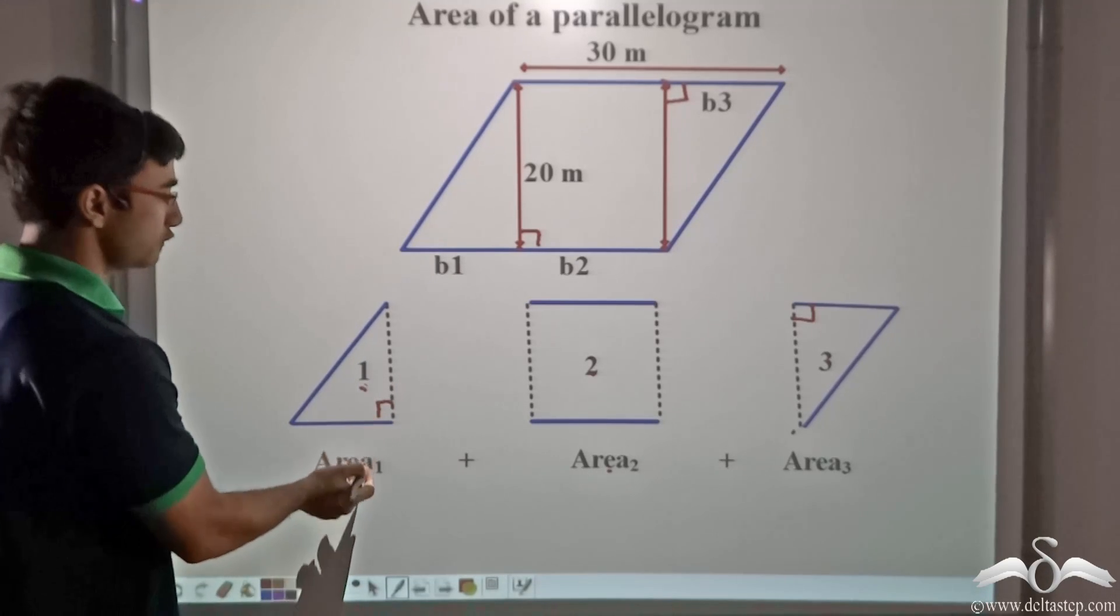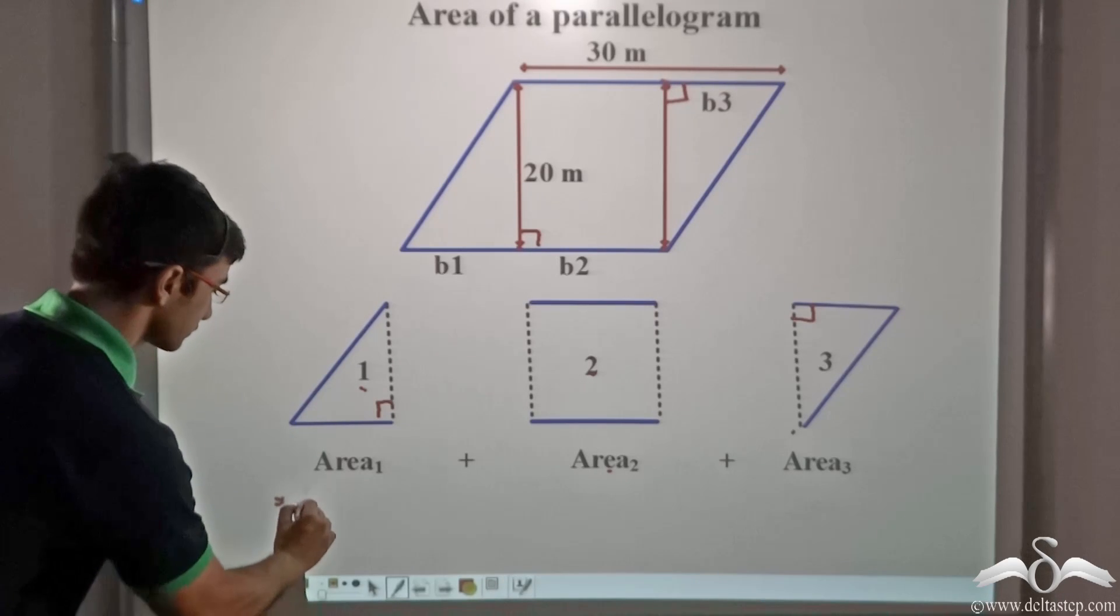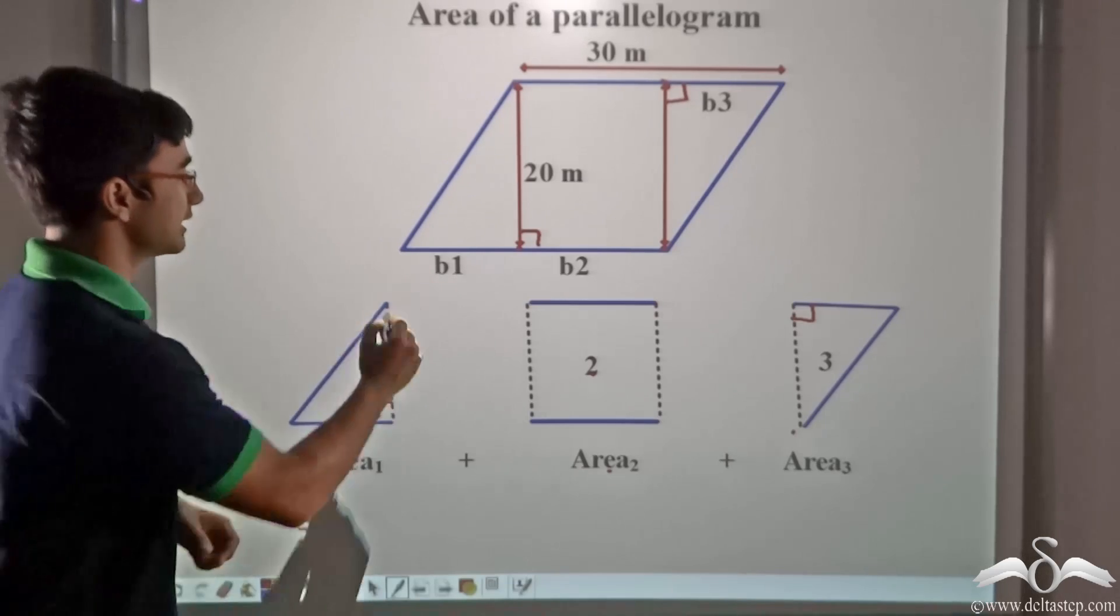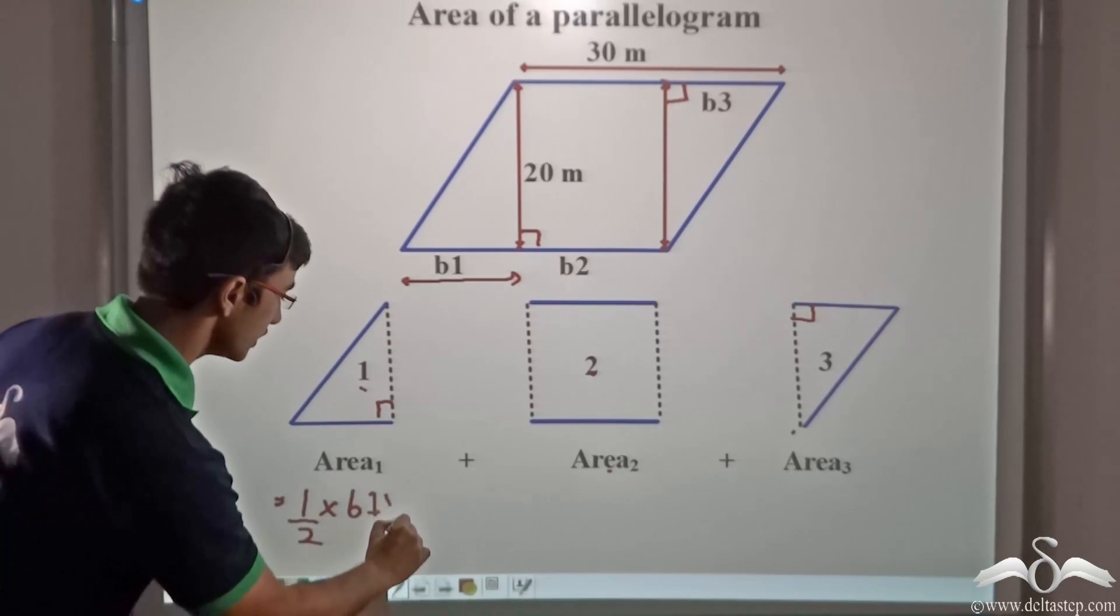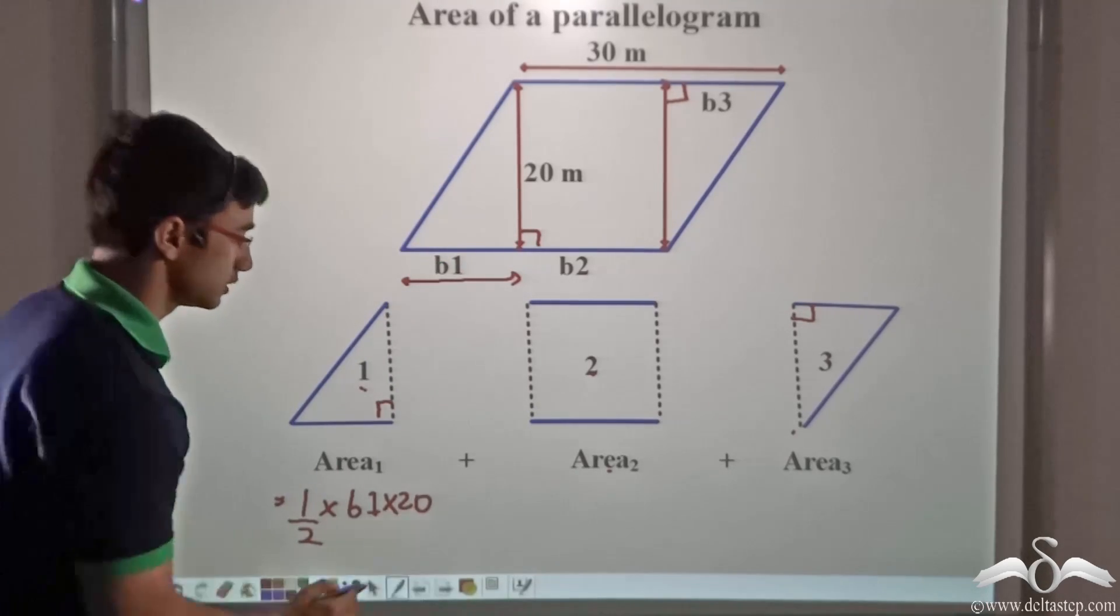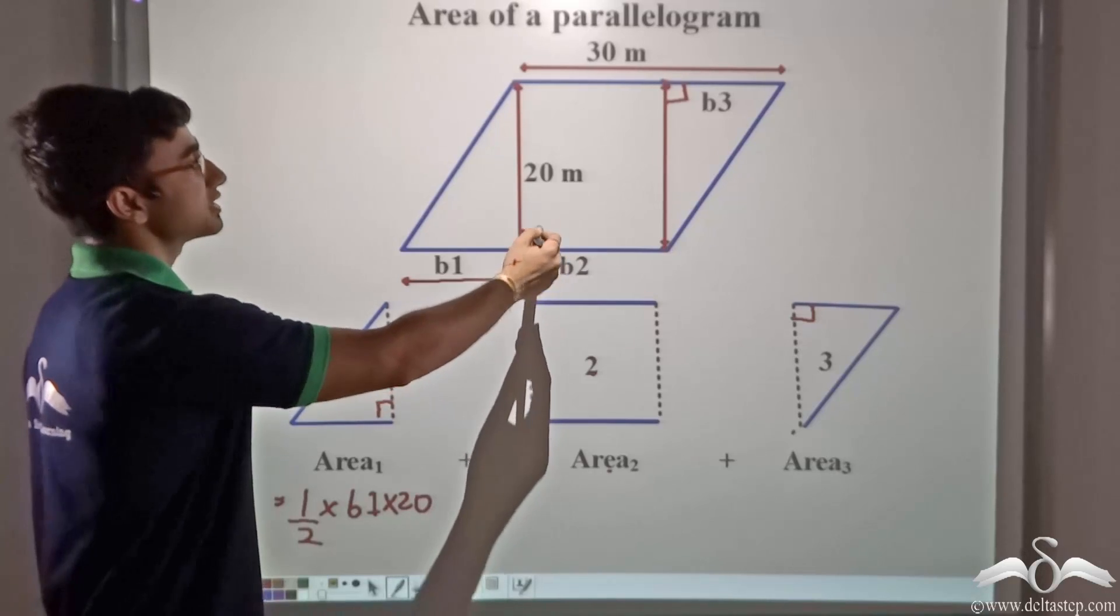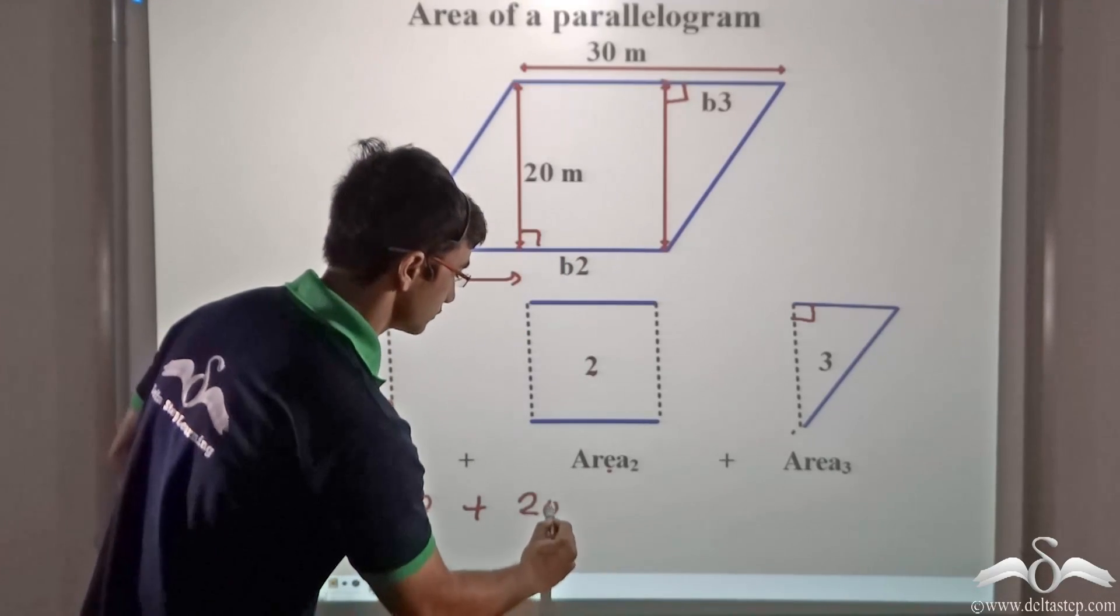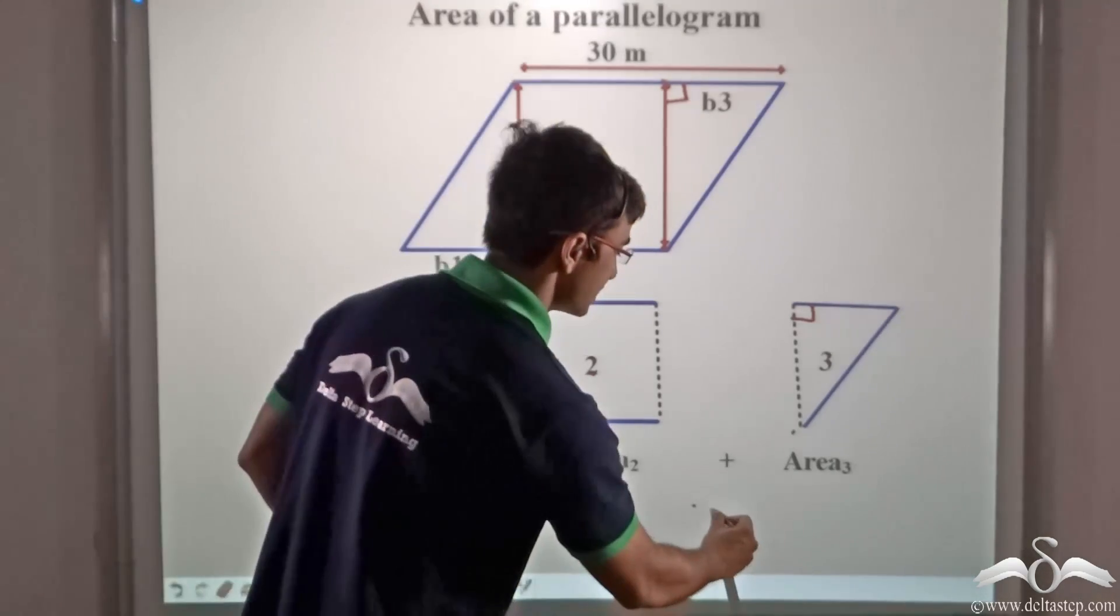So let us find out the area of figure one. The area of figure one will be half into base that is B1 into height that is 20, plus the area of the rectangle, which is 20 into B2, plus